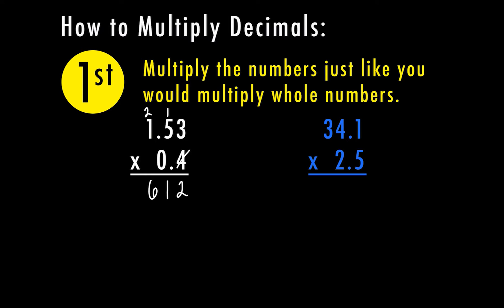So let's go ahead and multiply this other problem. This one has double digits on the bottom so it's going to be a little different. 1 times 5 is 5. 5 times 4 is 20. 5 times 3 is 15, 16, 17. Now I'm finished with the 5 so I have to put a 0 here before I can multiply by my tens digit. 2 times 1 is 2. 2 times 4 is 8. 2 times 3 is 6. Then I have to add these two rows together: 5, 2, 15, and 8.